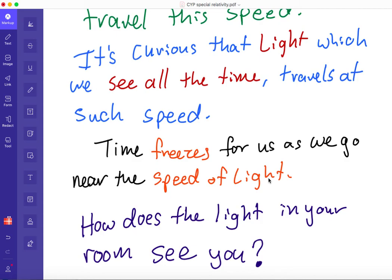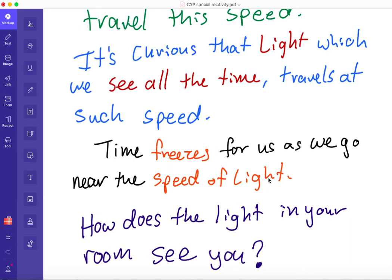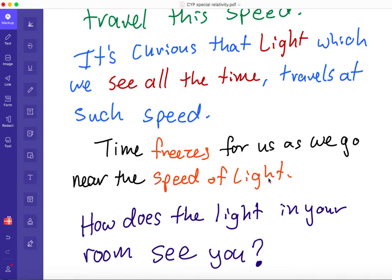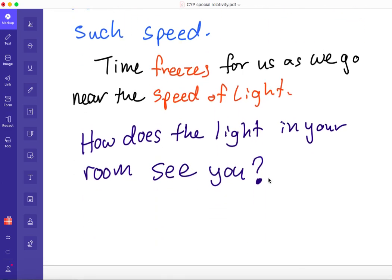So the speed of light is very important. We see that if we try going to the speed of light, time freezes. We need a lot of energy. But it's pretty curious that the light in your room right now or coming out of your computer or from the sun, it moves at this speed all the time. So how does the light see you? Try and put yourself in the place of the light in your room. If we move at the speed of light, we'll see millions of years happen in a fraction of a second. So what does the light see as it goes from your light bulb to your eyeball? That's what I want you to think about.